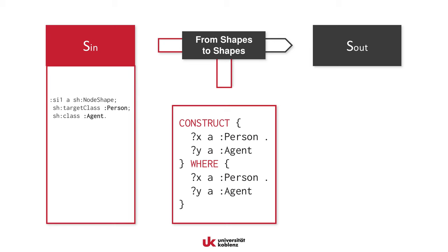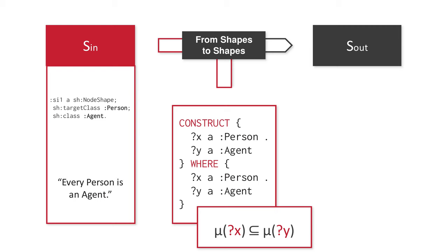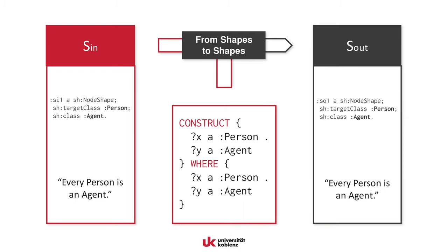Let us also assume that we know about a single input shape I1, stating that every person must always also be an agent. If we assume that all input graphs our query ever encounters must be valid according to this shape, we can deduce that all bindings of the variable X are a subset of all bindings of the variable Y, because every instance of Person is an instance of Agent. Therefore, in all output graphs that can be constructed by this query over valid inputs, it still holds that a person must also be an agent.